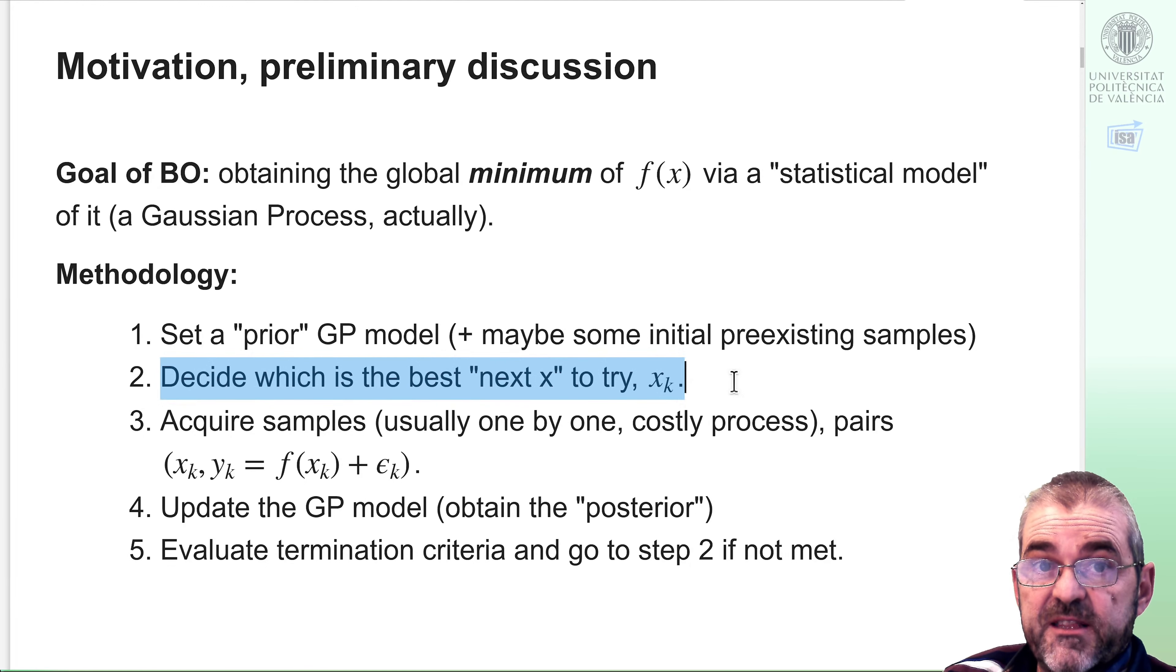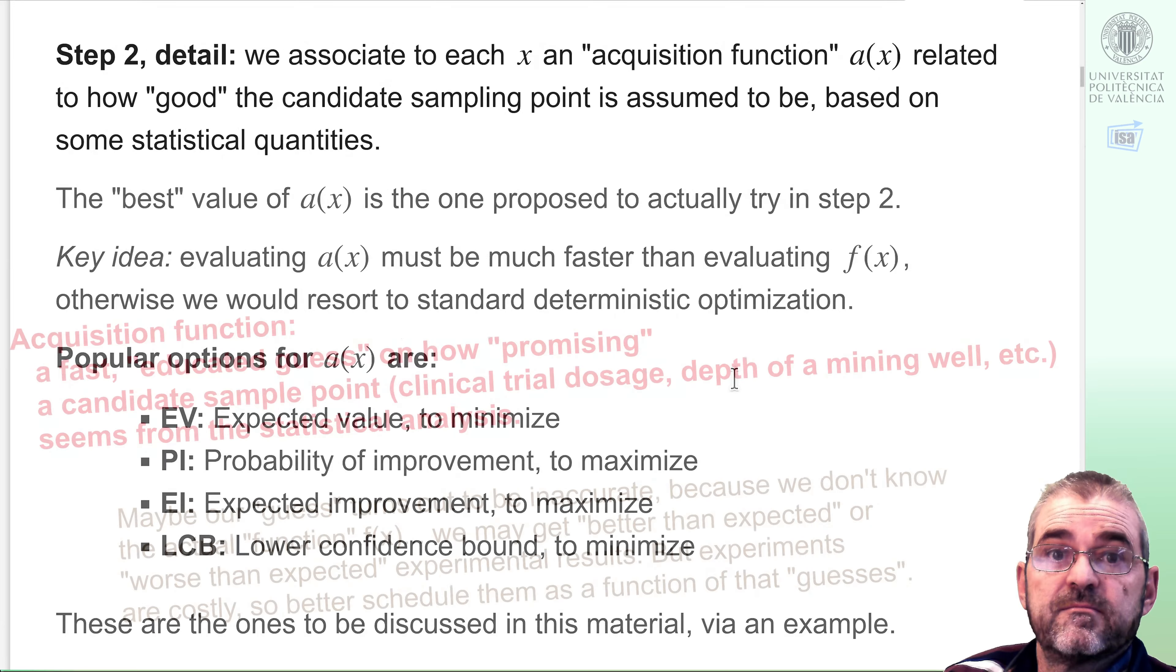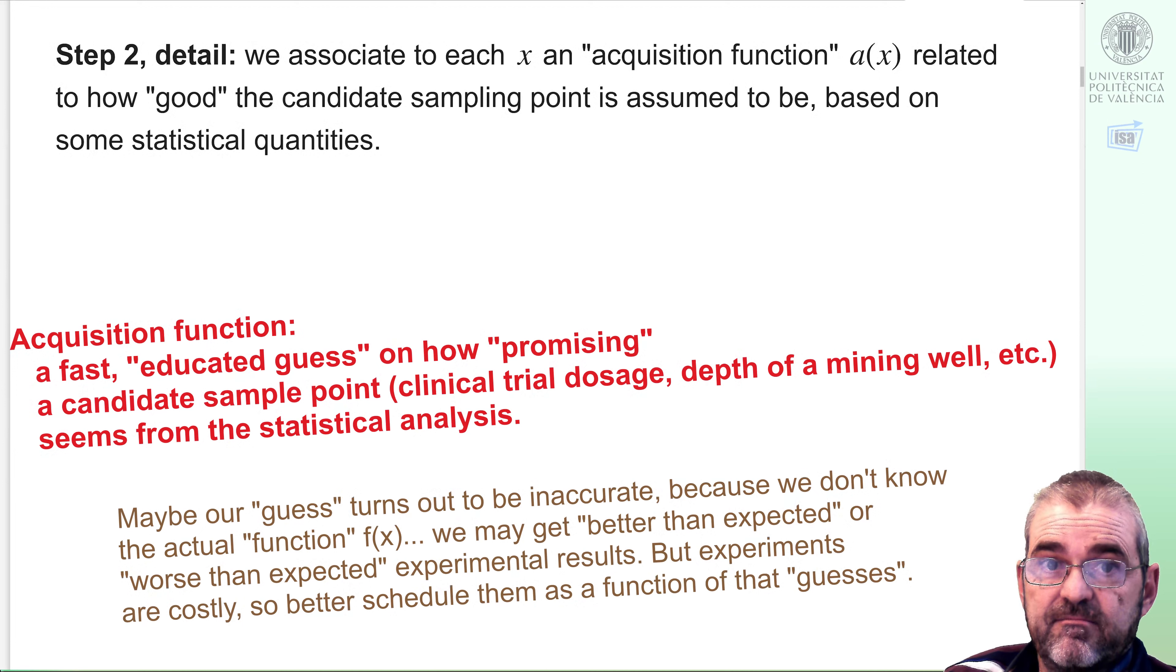The objective of this video is starting with the detail of the second step. The basic of that step is crafting something easy to compute that gives me a hint on how good a sample might be. That something is called an acquisition function.